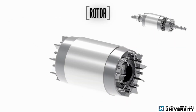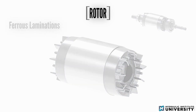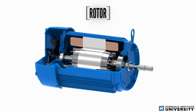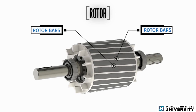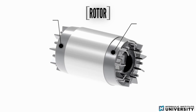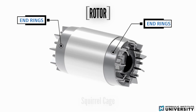The rotor is the rotating part within the electric motor. It consists of another set of ferrous laminations mounted on a shaft; the laminations have slots to hold the electric conductor bars — rotor bars. The rotor bars act as a closed conductor short-circuited at each end by end rings. This type of rotor is often referred to as the squirrel cage.